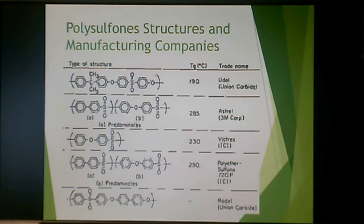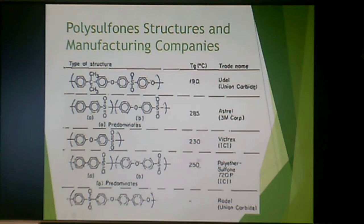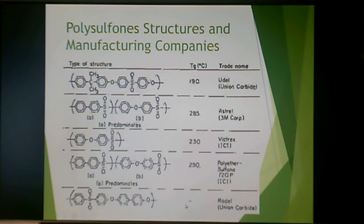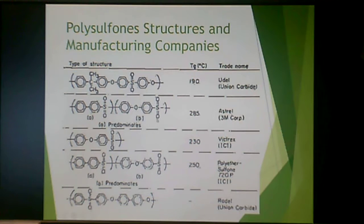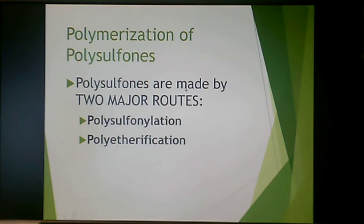So this is the Udel type, this is the Astral type, this is the Vitrex, and then there's the Radel type of polysulfones. Once again, all of them have sulfone groups in the backbone and that's how you can tell they're polysulfones.